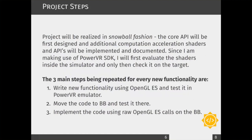First, I will be writing the skeleton code — the API skeleton code and the GL calls — which will establish the core functionality of the project. Then I will write each part of the acceleration for array addition, filtering, and matrix multiplications in separate shaders, which will be tested on the PowerVR emulator on my PC. Finally, this code will be moved to BeagleBone and tested still utilizing the PowerVR SDK, and then moved to raw OpenGL ES calls on the BeagleBone. This will be done for each of the accelerations.